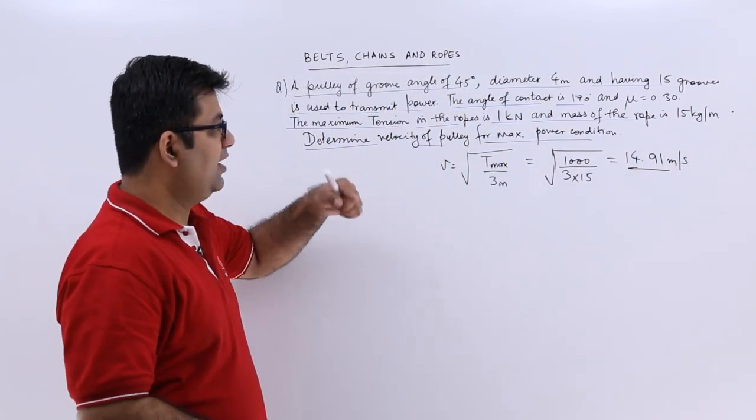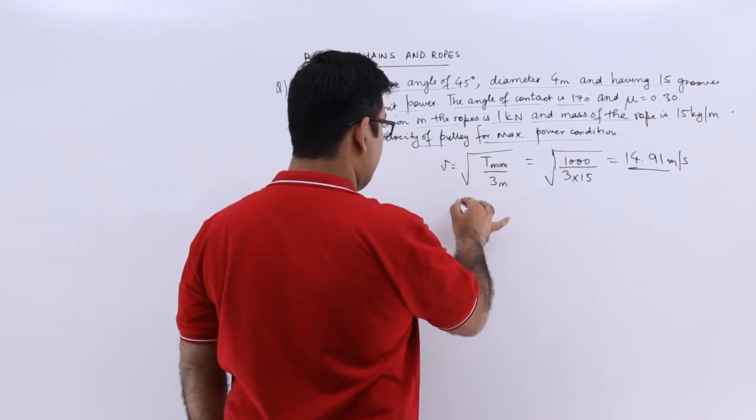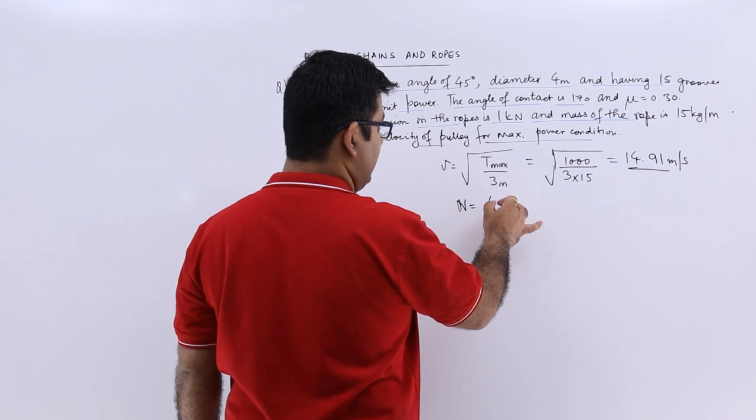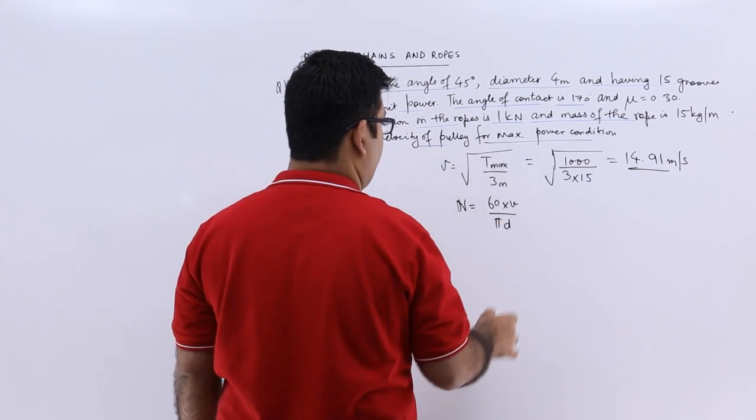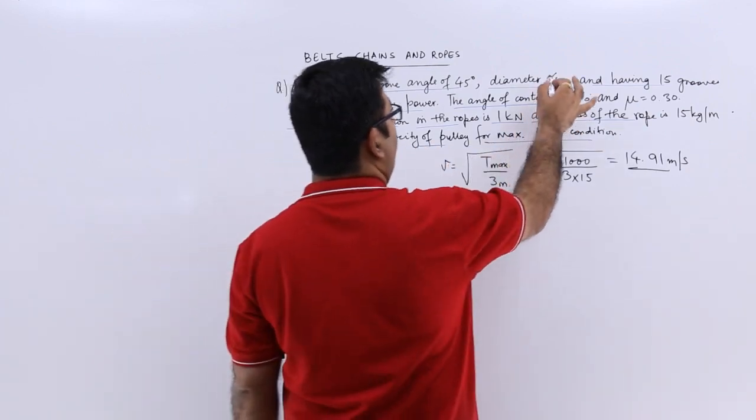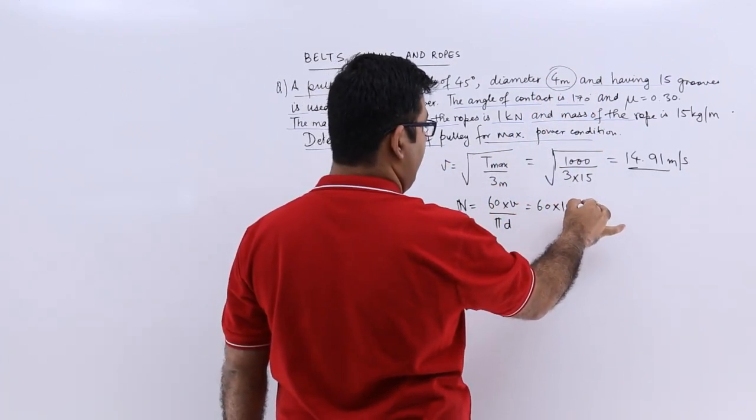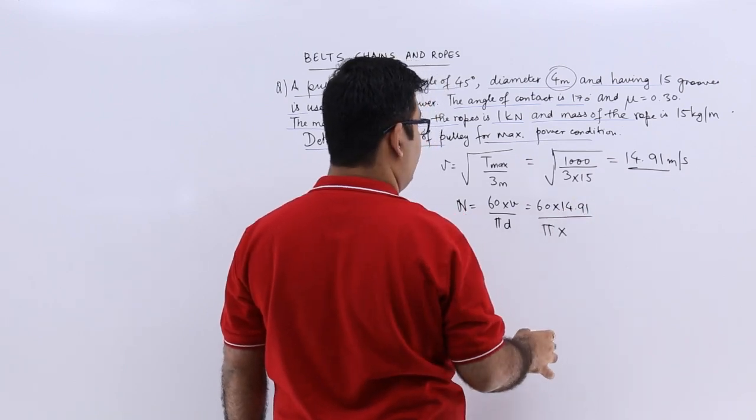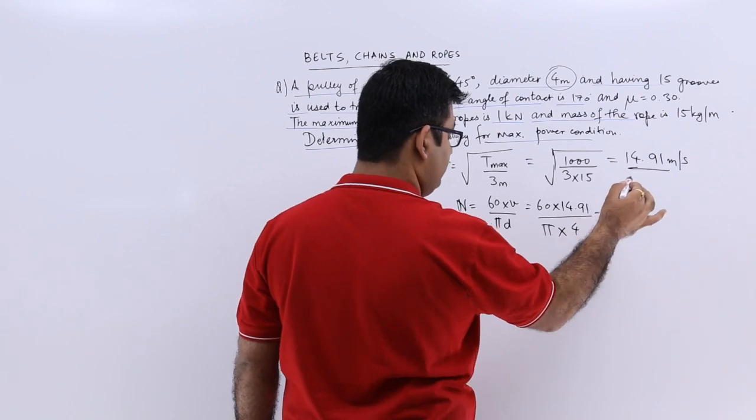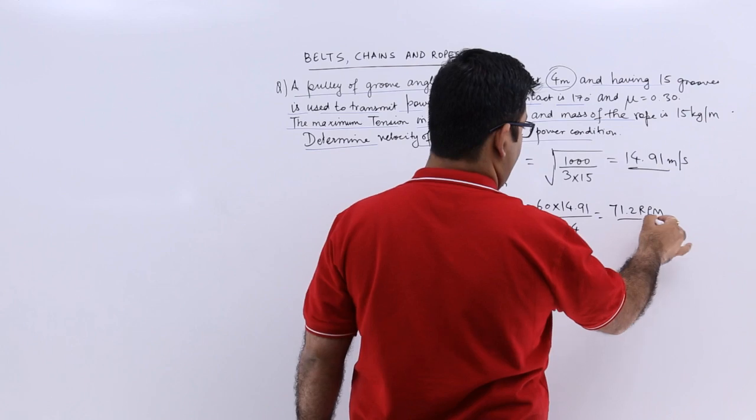Now from here we need to calculate the rpm of the pulley. So that would be 60 times velocity upon pi into d. Now d is 4 meters. So this would be 60 into 14.91 upon pi into dia is 4. That would give you 71.2 rpm.